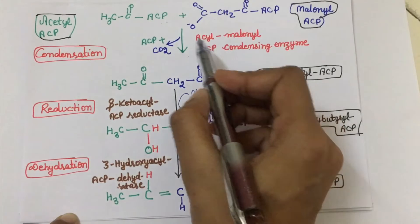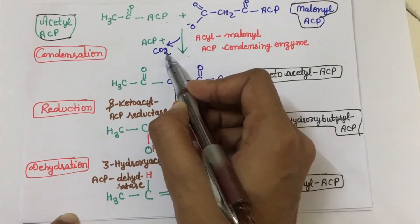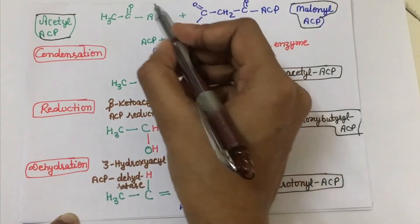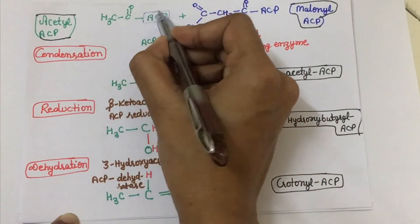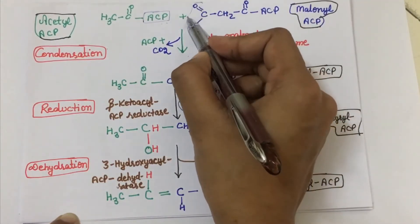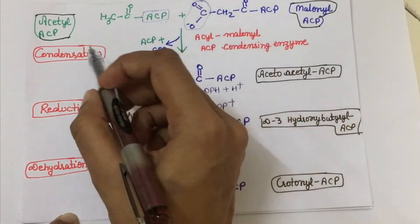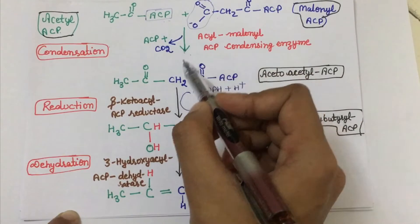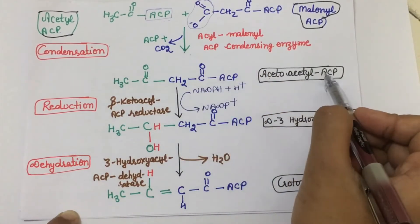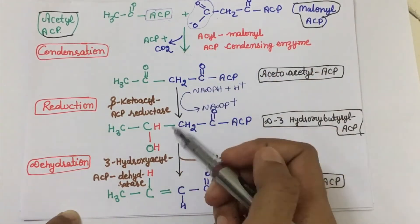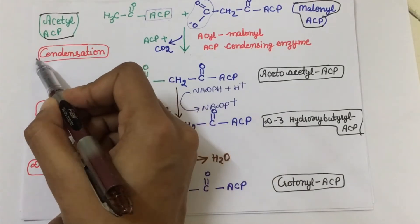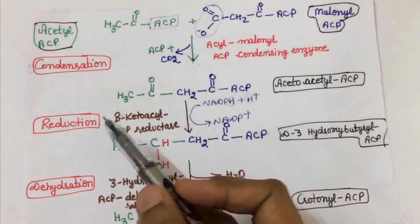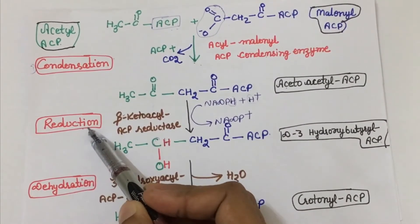Now acetyl-ACP and malonyl-ACP are acted upon by the acyl-malonyl ACP condensing enzyme — this is part of elongation. The ACP from acetyl-ACP and carbon dioxide from malonyl-ACP are removed, leading to the formation of acetoacetyl-ACP. This is the first step in elongation, which is condensation.